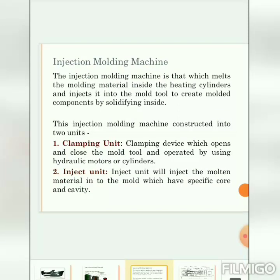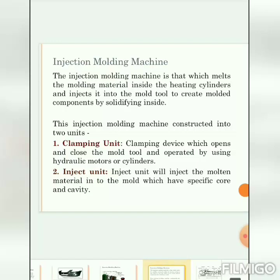This injection molding machine is constructed into two units: the clamping unit and the injection unit. The clamping unit opens and closes the mold tool and is operated by hydraulic motors or cylinders. The injection unit is used to inject the molten material into the mold which has a specific core and cavity.